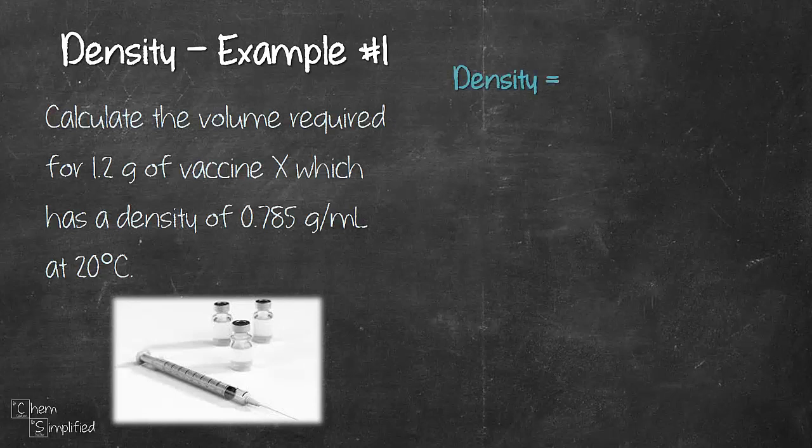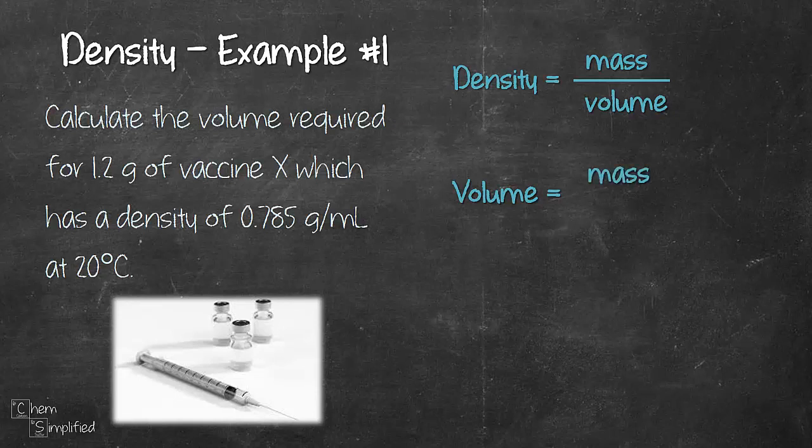So let's start with the formula for density, which is mass over volume. But since we want to calculate volume, let's rewrite the formula a little bit—rearrange it. So I bring volume up, so then it becomes volume equals mass over density. Now let's plug in the values that we have: we have 1.2 grams for the mass and 0.785 grams per mL for the density.